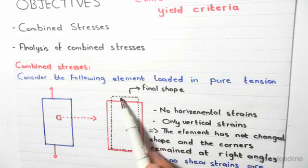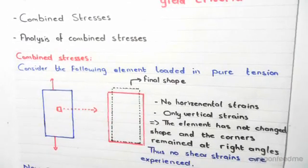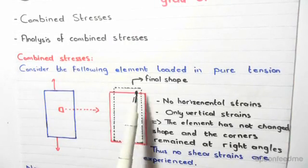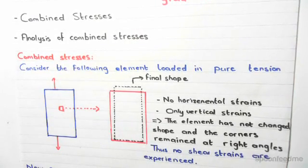After it's loaded in pure tension you can see the final product which is the black dashed lines. Now if you notice the shape has gotten longer and thinner but there was no horizontal strains. So it's only gotten longer and it's gotten thinner.